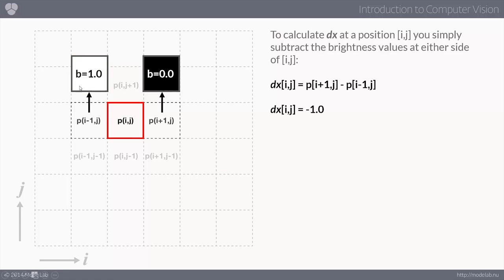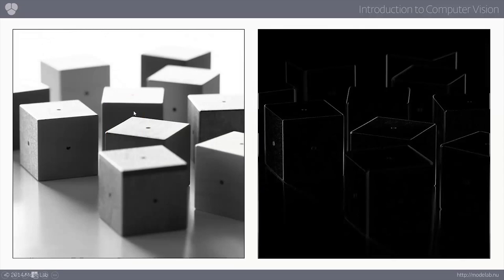If we go to the other side, we actually get a negative value — zero minus one. These values are symmetric from negative one to positive one, and they tell us how quickly the brightness value is changing relative to the current pixel. When we look at an image, the dx is actually going to reveal the vertical edges.